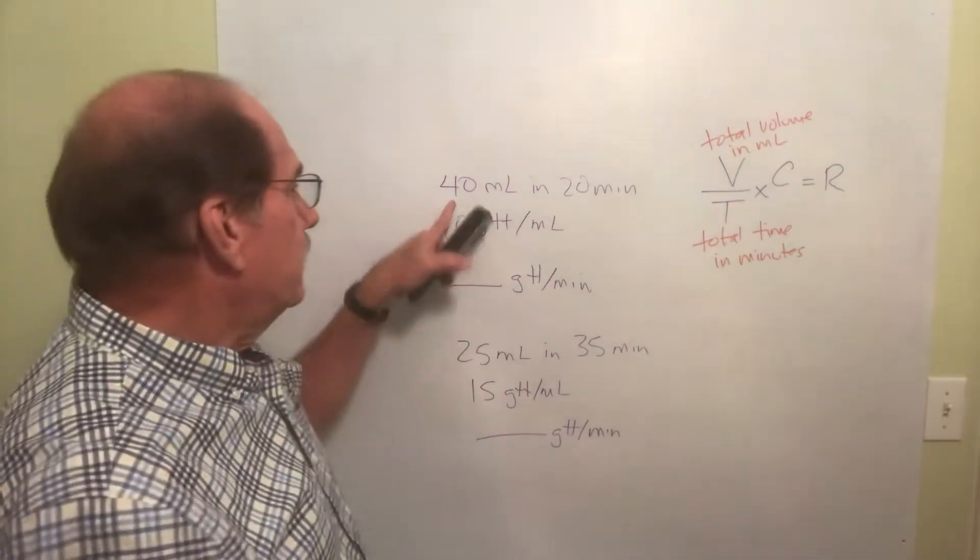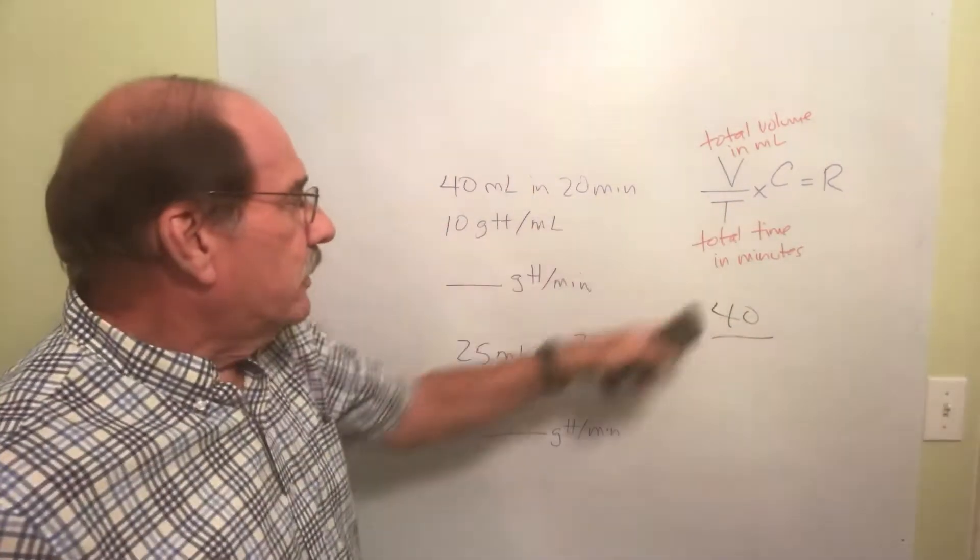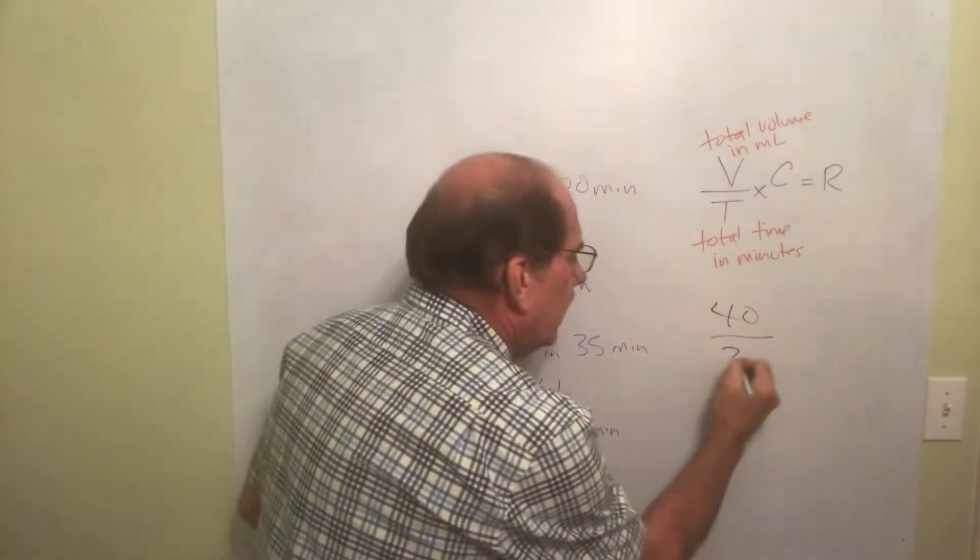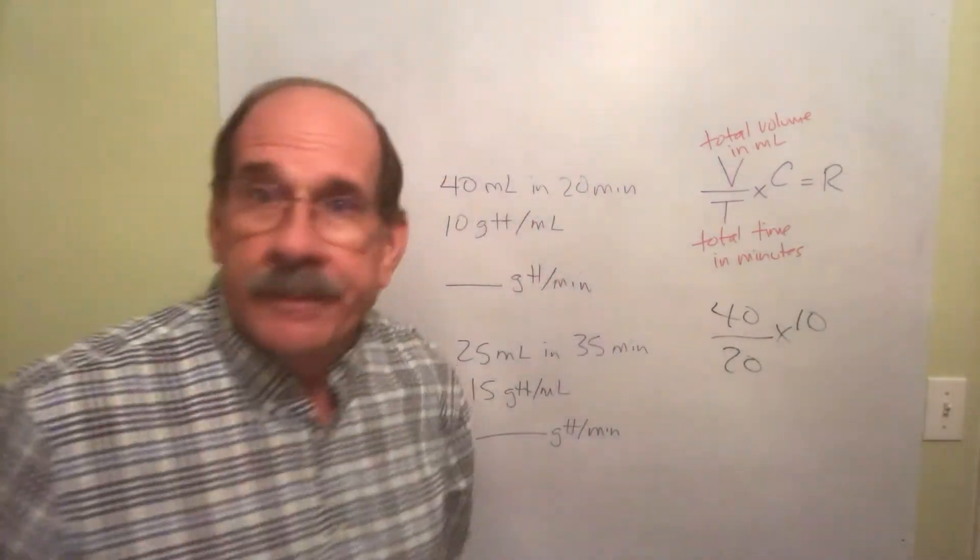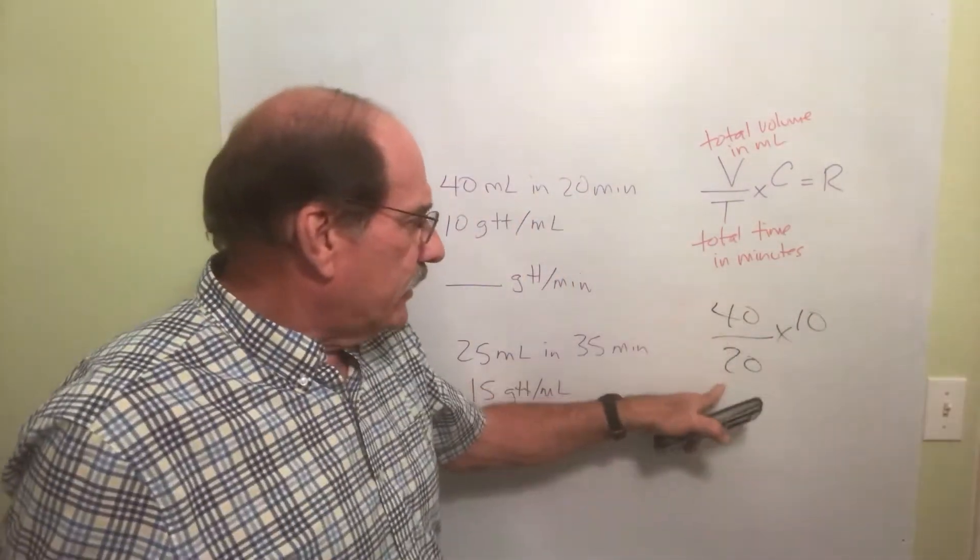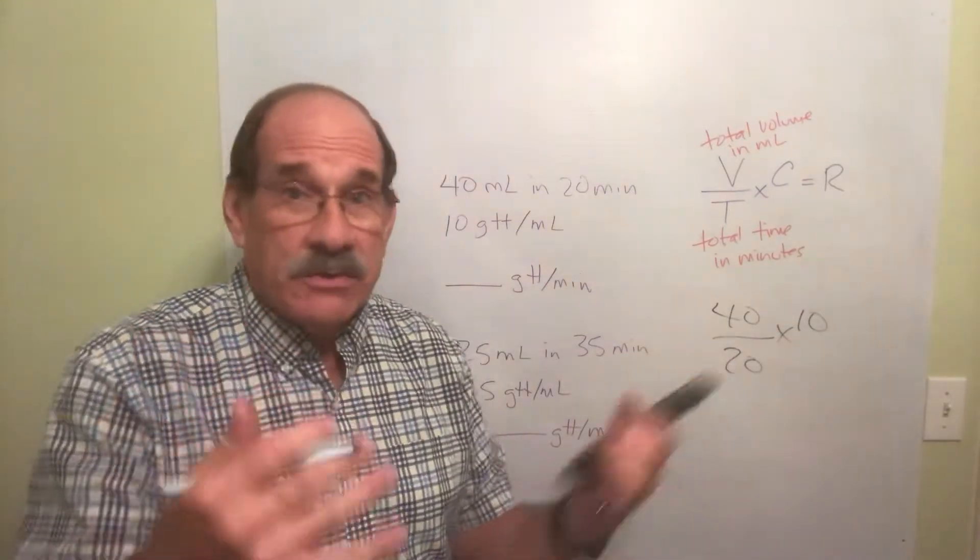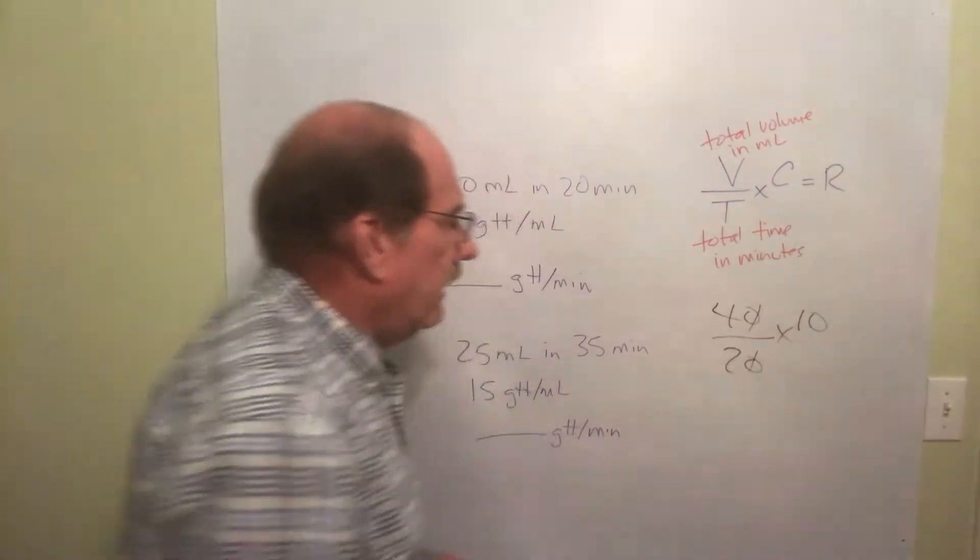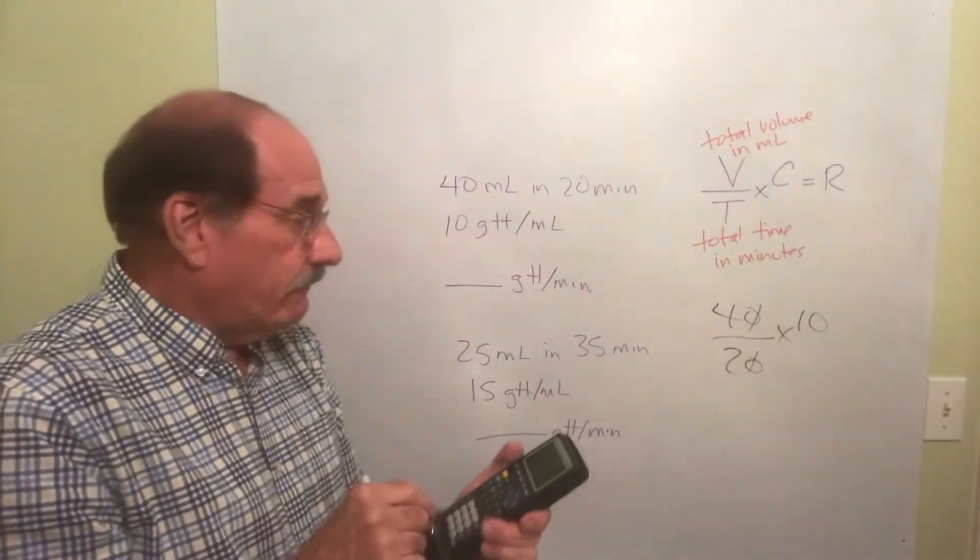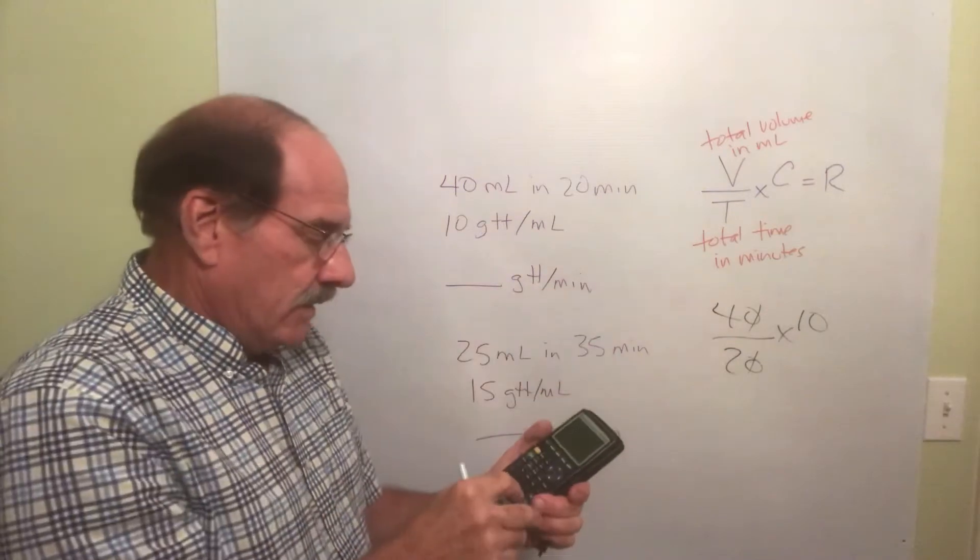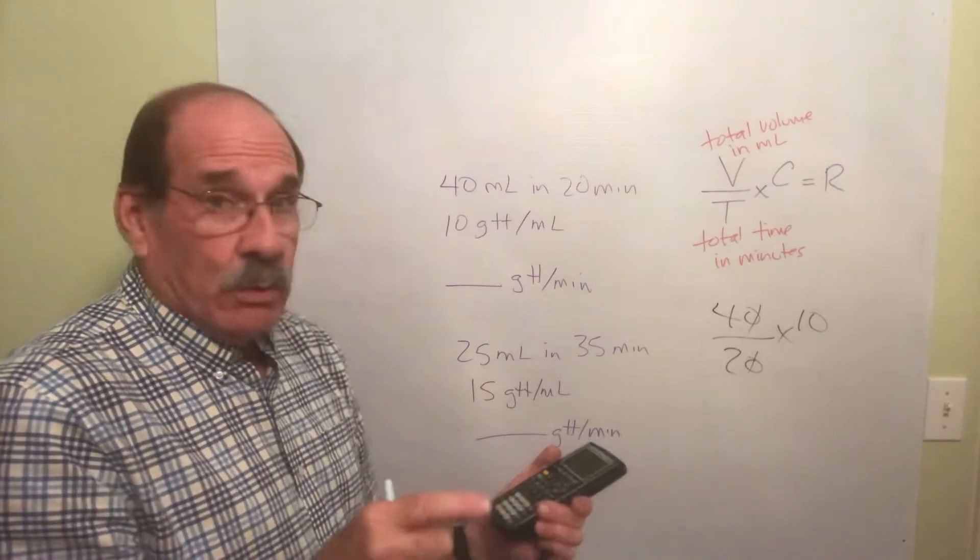Total volume in milliliters is 40. Divide by the total time in minutes is 20. The drop factor is 10. It's 40 divided by 20 times 10 or 40 times 10 divided by 20, whichever. You can cancel zeros too if you want to. My goodness. Answer 20. Let's see. Let's prove that to you. I can take 40 to do it the original way. Times 10 then divide by 20. Answer is 20.